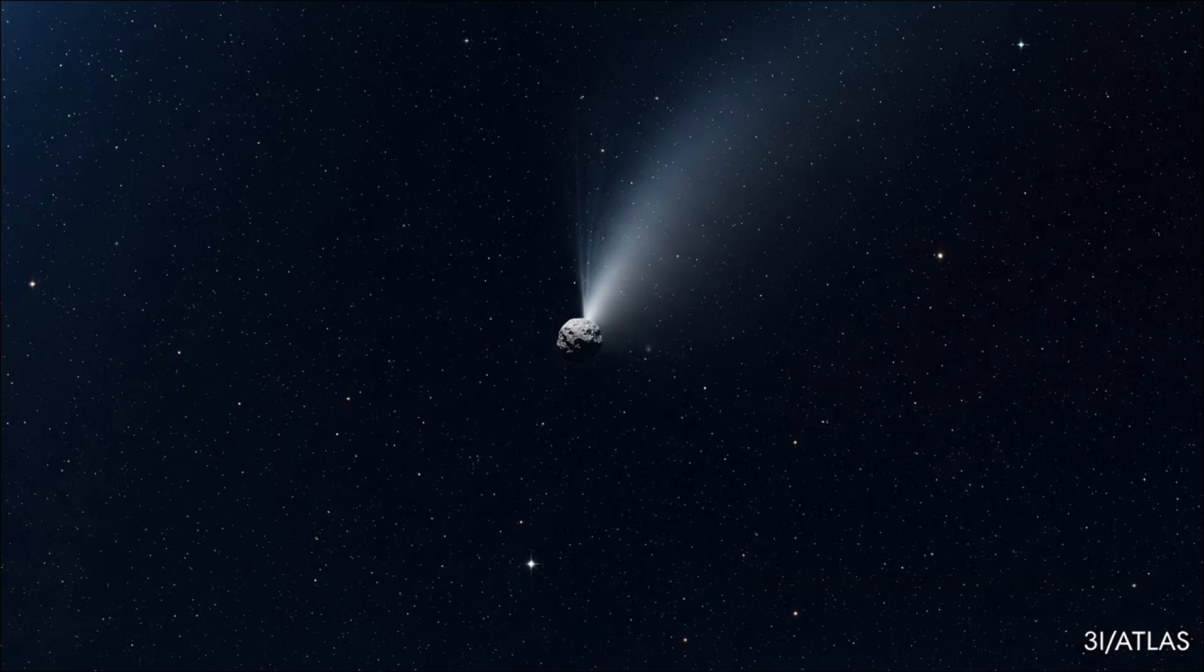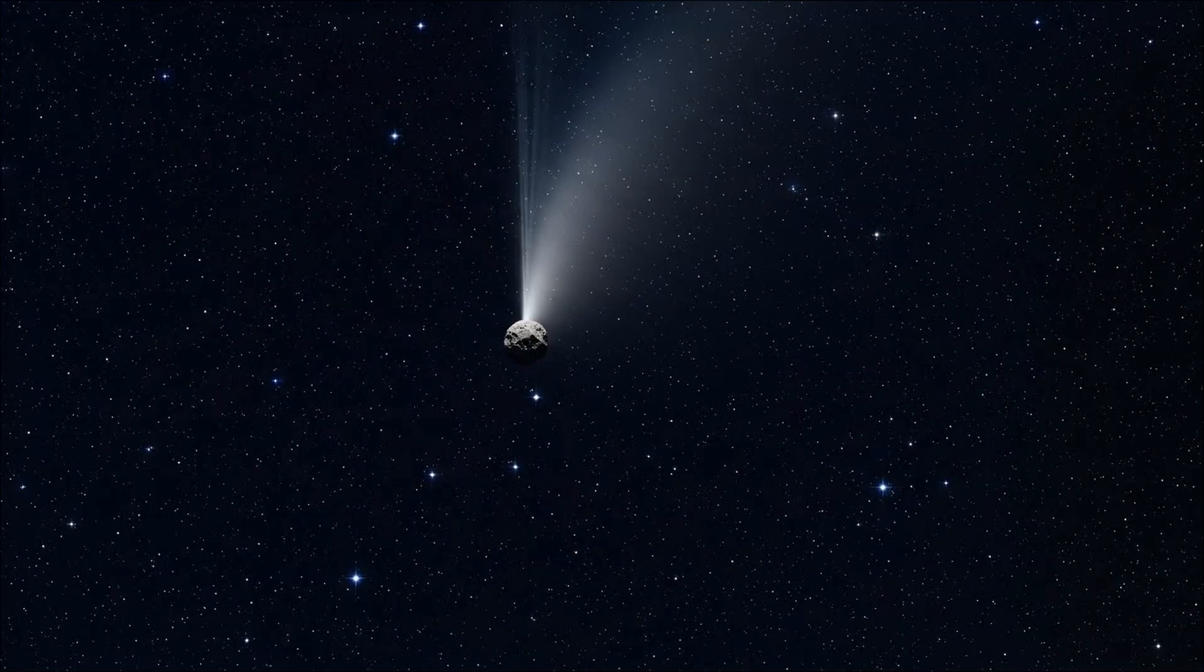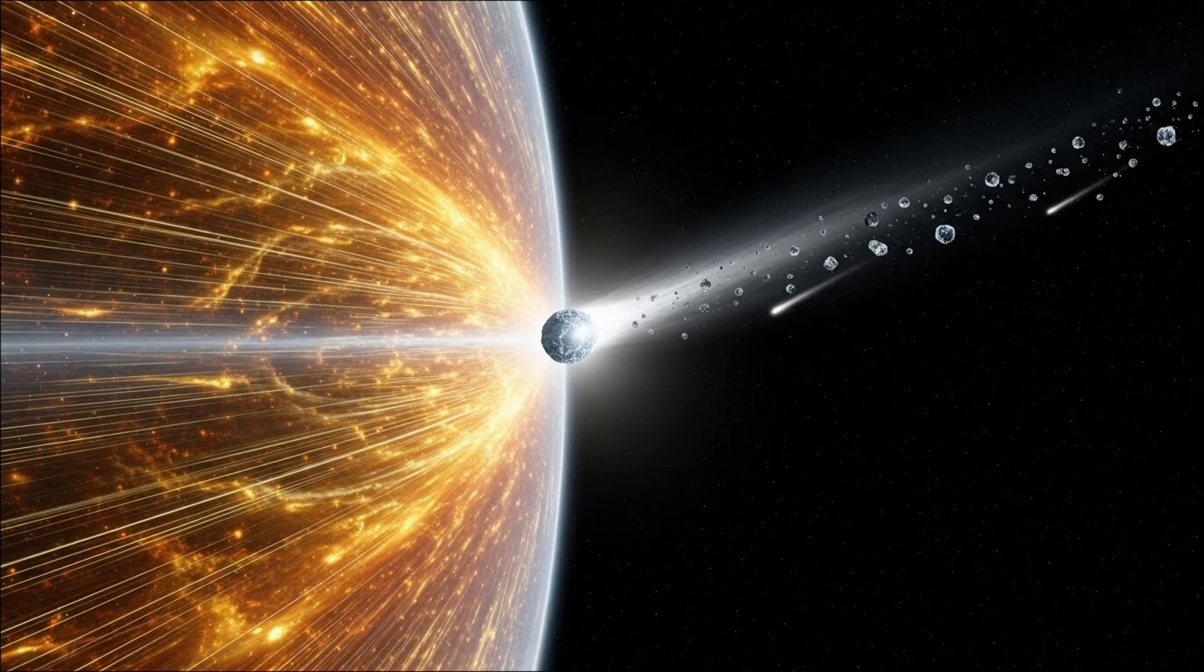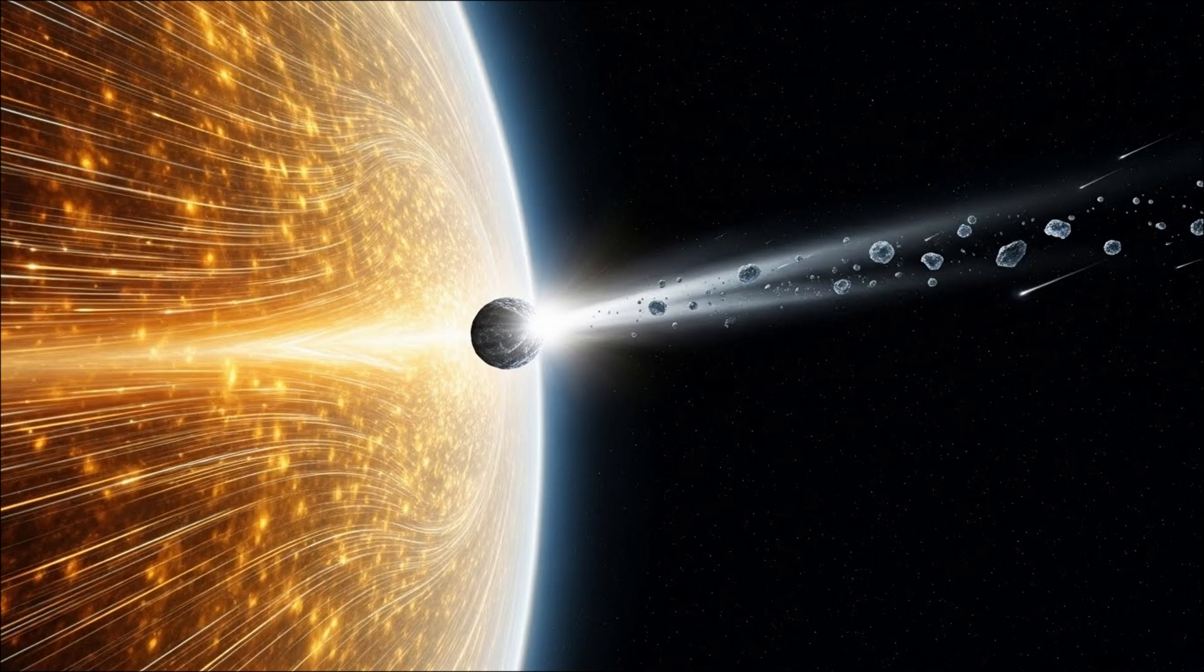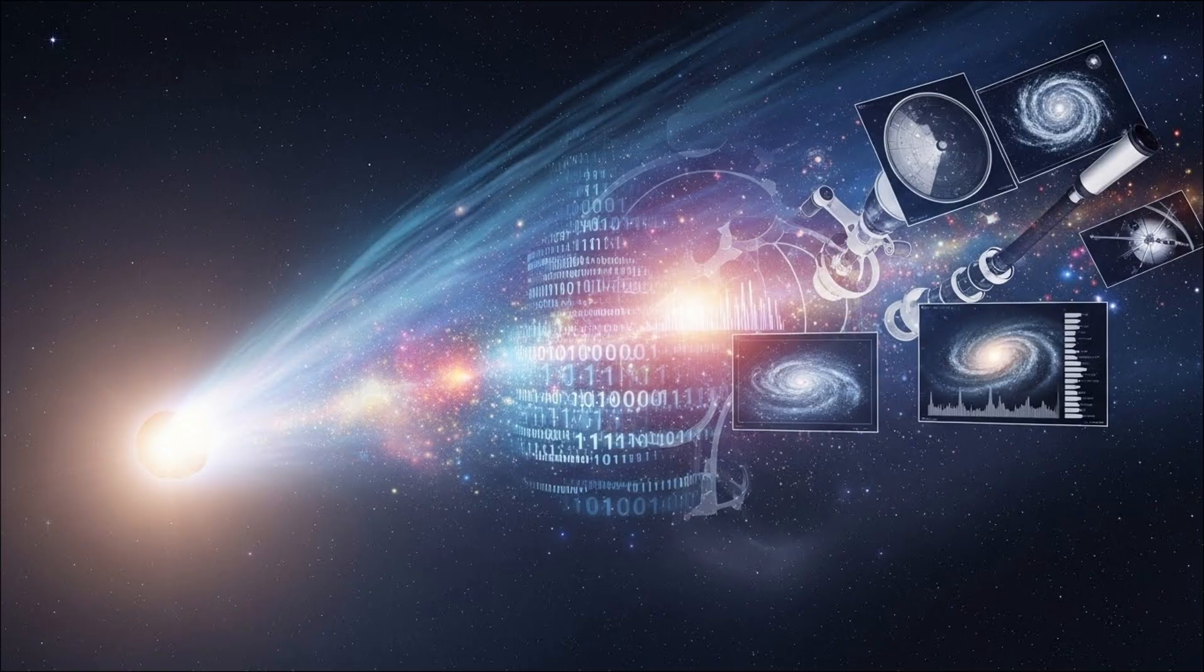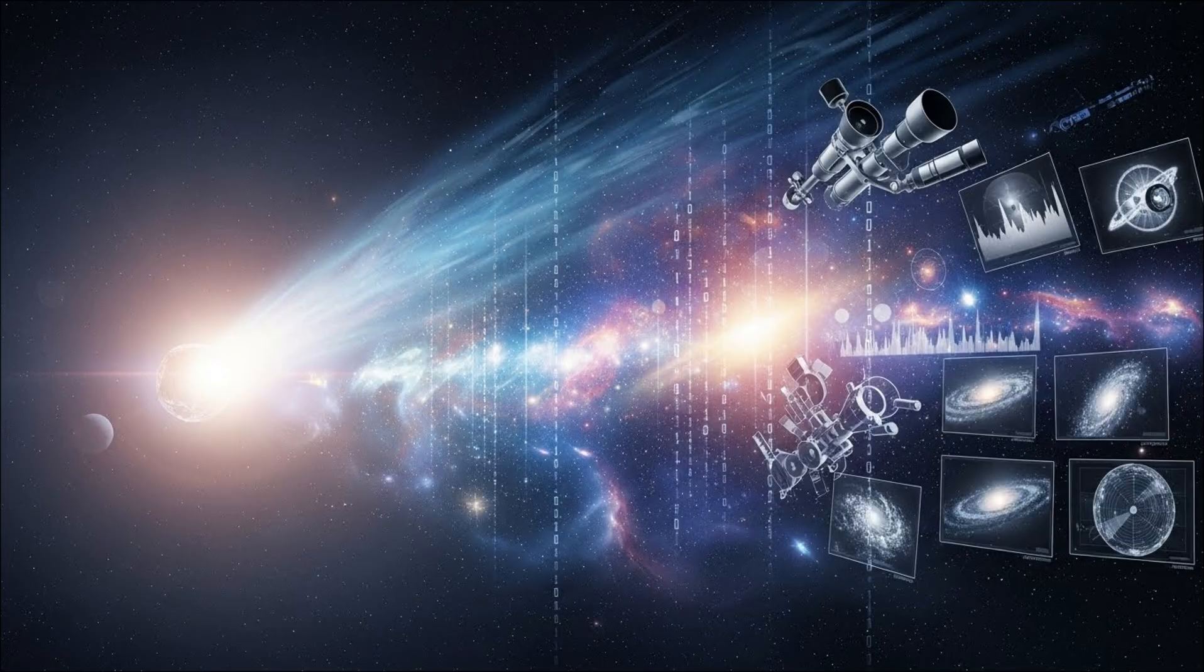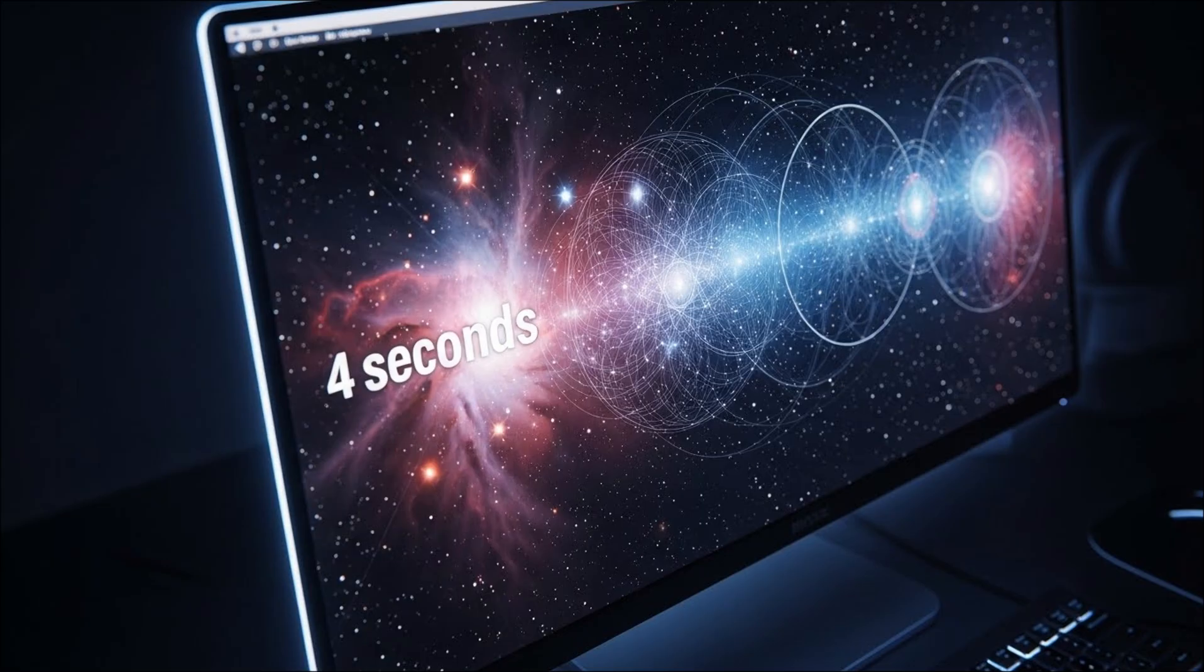And sometimes, if we're lucky, we catch a glimpse of something extraordinary—a glimmer, a whisper, a four-second anomaly that reminds us how much we don't know. Think about what had to happen for us to see this. 3I-Atlas, a wanderer from another star system, had to pass through our solar system at precisely this moment in human history, a window of barely a century in which we possess the technology to detect such things. Hubble had to be operational, functional, and scheduled to observe the comet at that exact time.